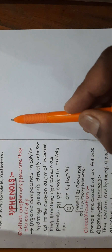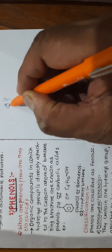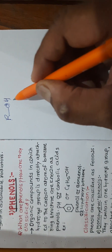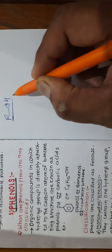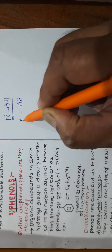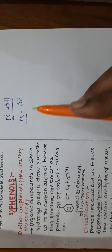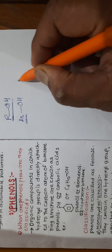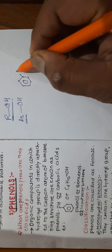Phenols and alcohols are kept together because they contain the same functional group — the OH (hydroxy) group. The difference is that in alcohols, the hydroxyl group is attached to an alkyl group, so the general formula of alcohols is ROH. In phenols, the same OH group is attached to an aromatic ring structure such as benzene or naphthalene, represented by the general formula ArOH.